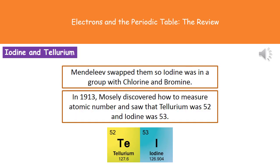An example of two of these elements that Mendeleev decided he was going to swap around are iodine and tellurium. So what he actually worked out was that iodine would be better if it was in the group with chlorine and bromine. So he swapped it to that position. And then in 1913 another scientist called Moseley actually discovered how to measure the atomic numbers. And he saw that tellurium was actually 52 and iodine was 53. So even though Mendeleev didn't realize this, he carried out the correct swap there.